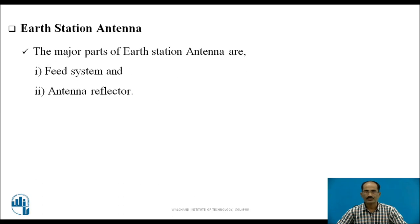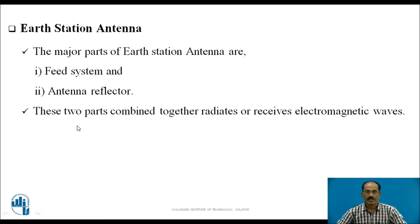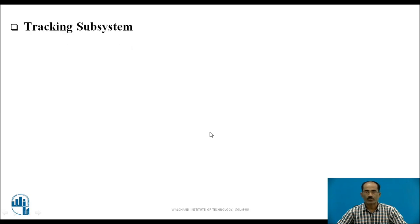The major parts of the Earth Station antenna are the feed system and the antenna reflector. The feed system is used to separate and simultaneously transmit and receive signals. The antenna reflector increases the gain, producing high-gain signals. Together, these two parts radiate or receive electromagnetic waves.